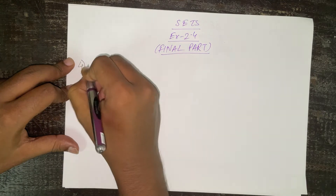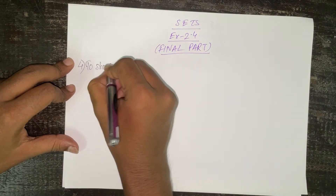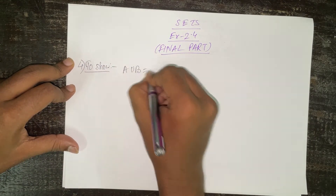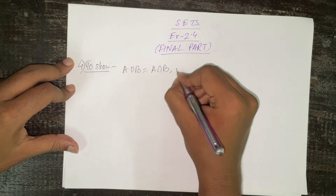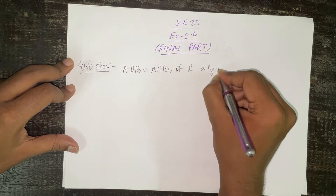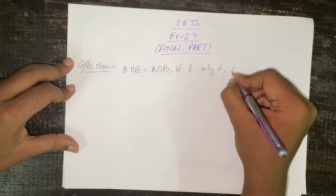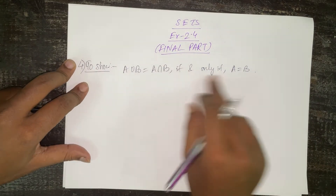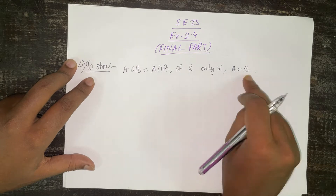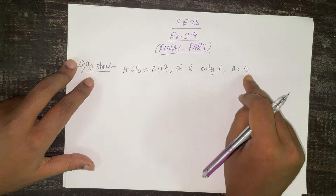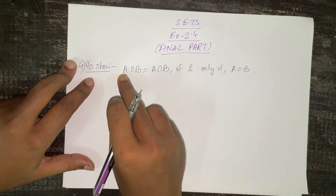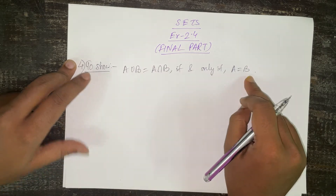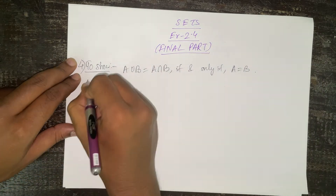We start with number 4. We have to show that A∪B = A∩B if and only if A = B. As we have seen earlier, 'if and only if' means we first take one side as the condition and prove the other part, and then we swap.